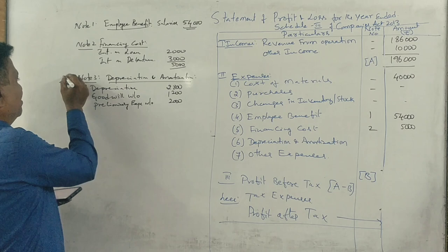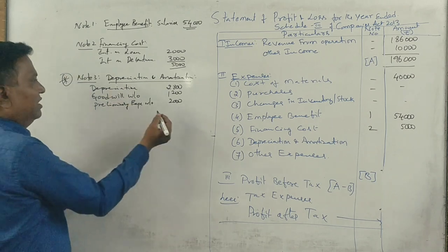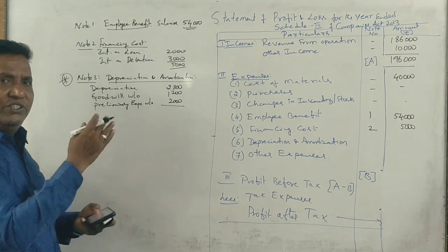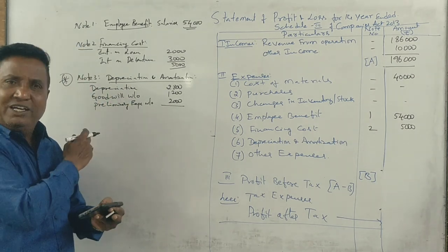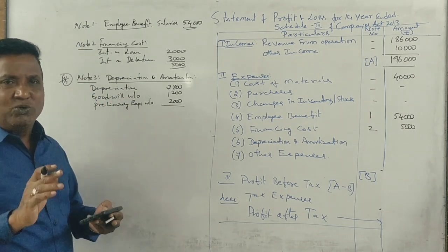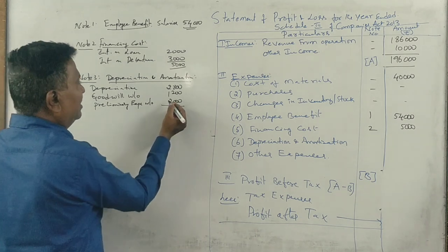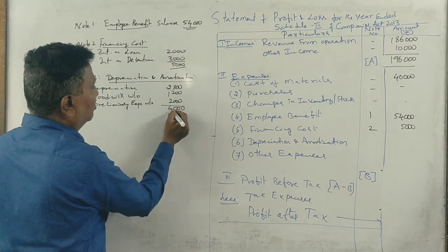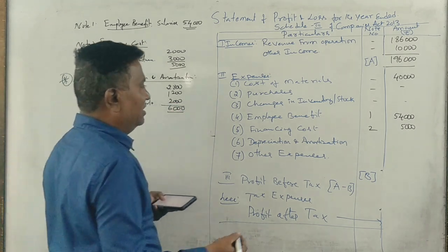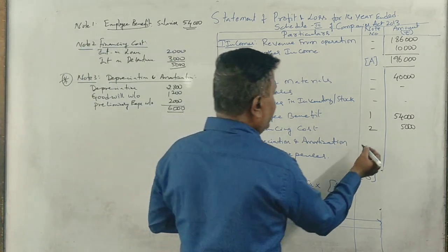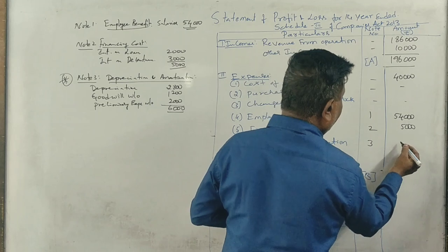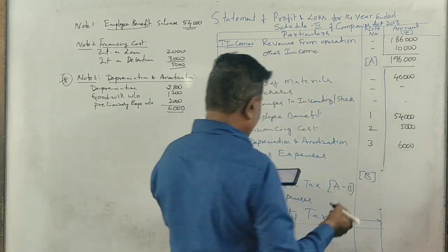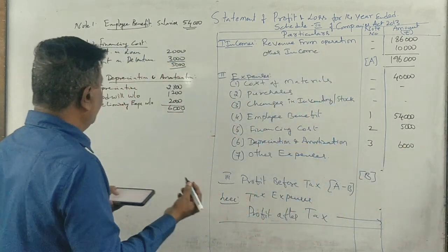This problem has a star mark. All the problems and revision mark — this one point is not in the total. Total depreciation and amortization is $6,000.